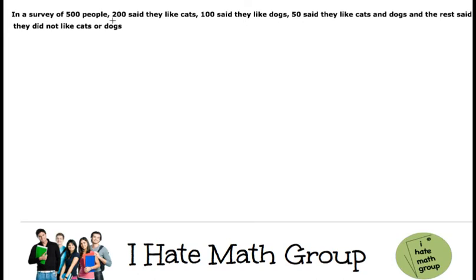In a survey of 500 people, 200 say that they like cats, 100 say that they like dogs, 50 say that they like cats and dogs, and the rest say that they didn't like either cats or dogs.